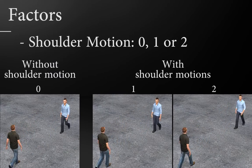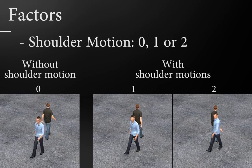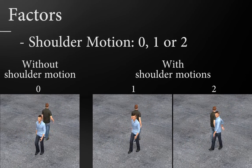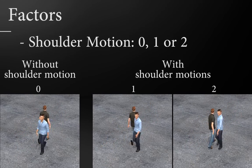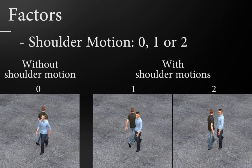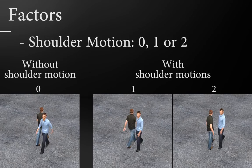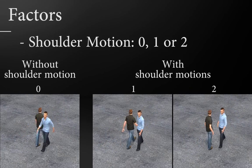This experiment considers two factors. The first one is the number of characters which exhibit shoulder motions. Zero means that no shoulder motion is added. One and two are respectively when one or two of the characters turn their shoulders when passing at close distance.